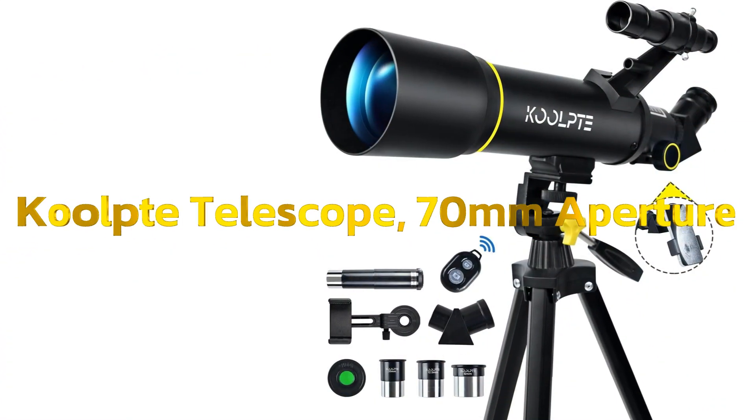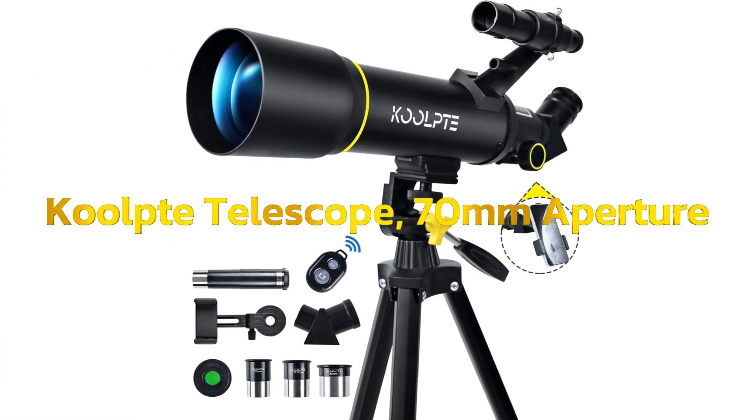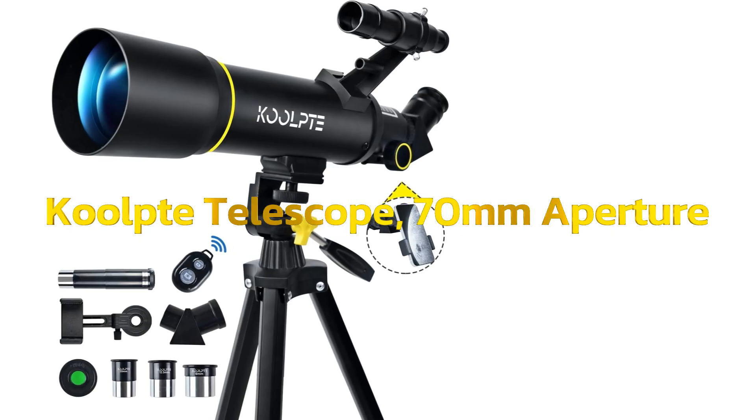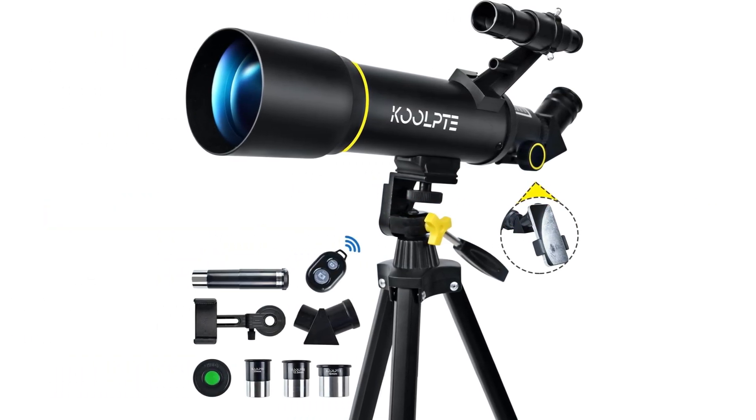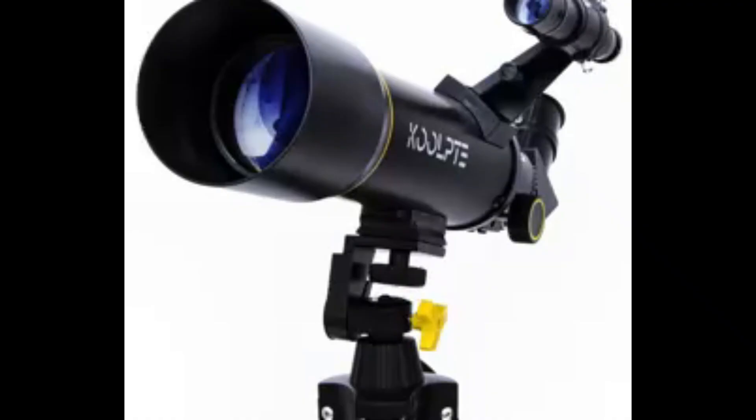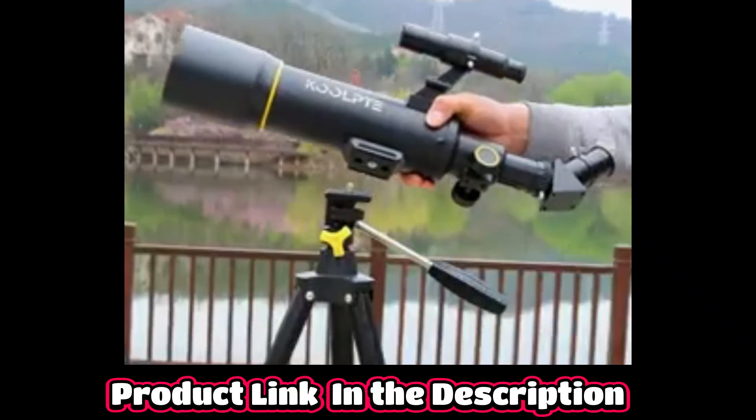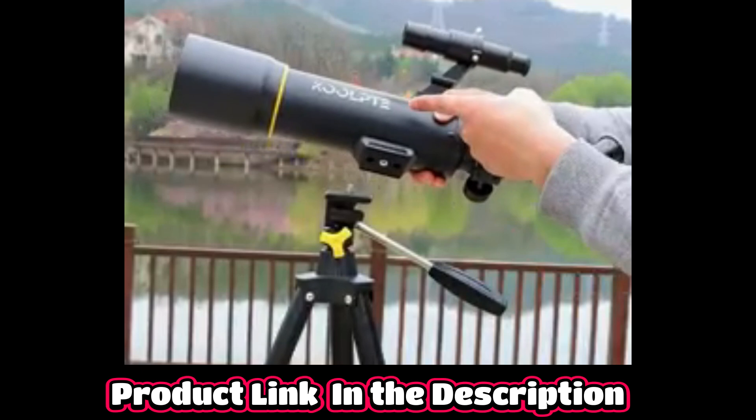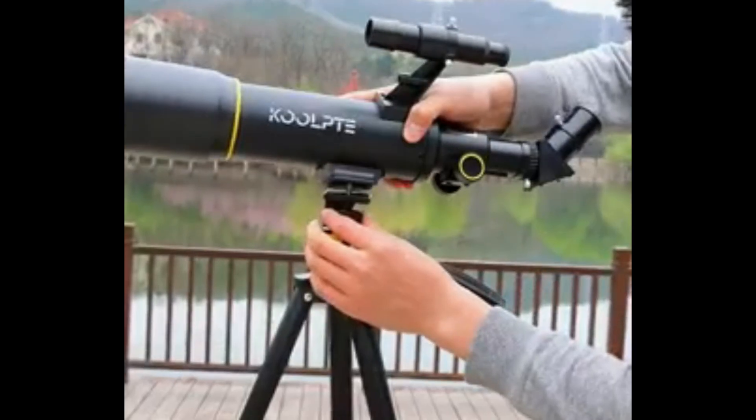Number 2. Colt Telescope, 70mm Aperture, 400mm AZ Mount Astronomical Refracting Telescopes, 20x200x, for kids and adults, portable travel with tripod phone adapter, remote control, easy to use. Model name 40070.